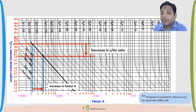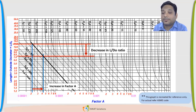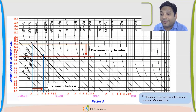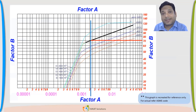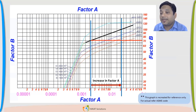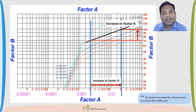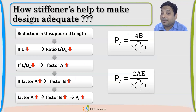Earlier the Factor A value was 0.00022. Now it is 0.4×10⁻⁴ — that is an increase in the value of Factor A. With Factor A increasing, the next step is to find Factor B. Once Factor A increases, it will also increase the Factor B value. We can see in the graph that as the vertical line for Factor A increases, Factor B also increases. So finally, introducing the stiffener increases the B value.